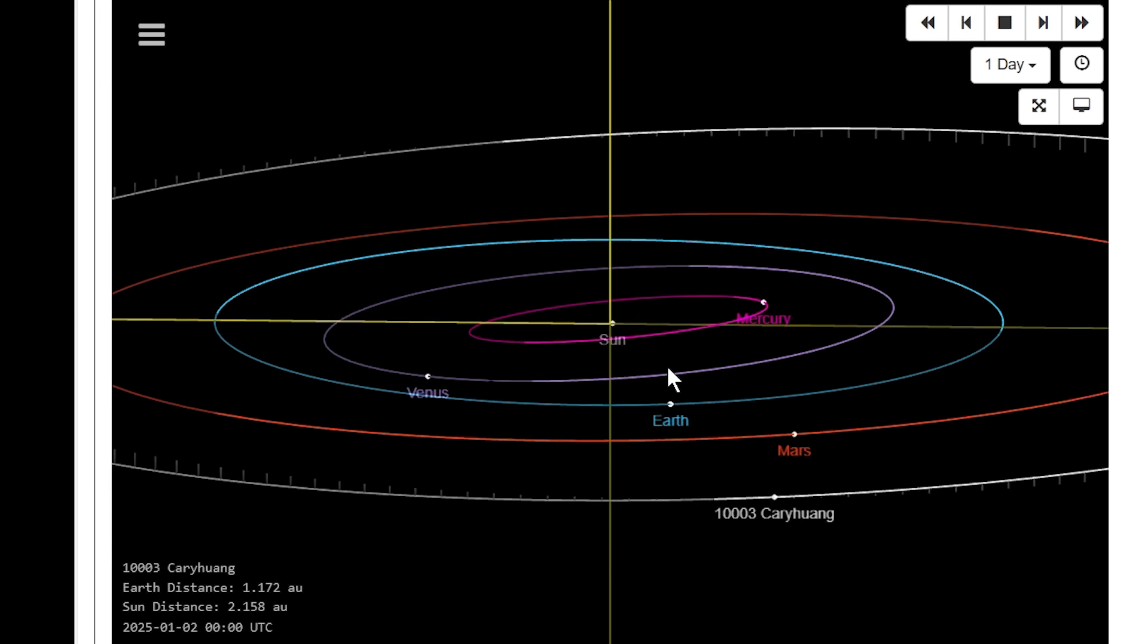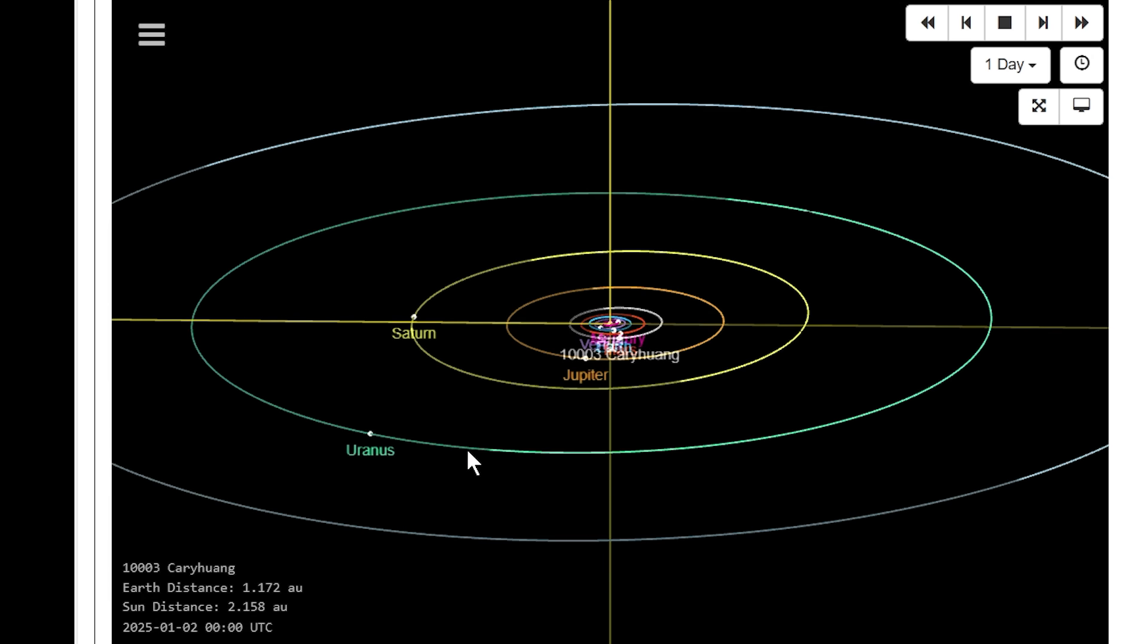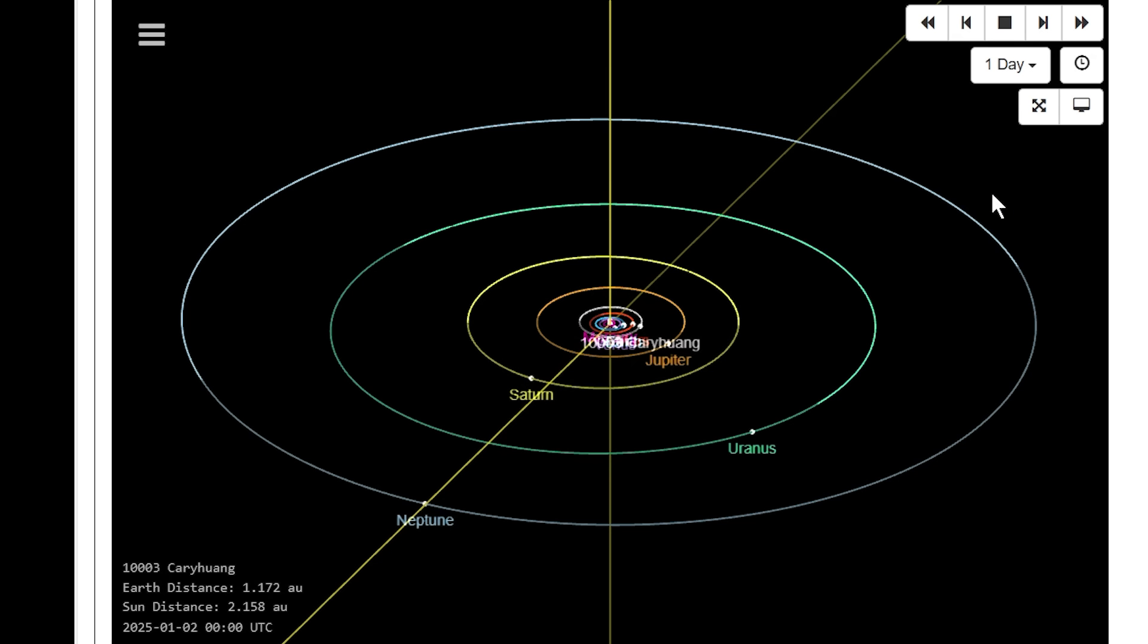And then just to show the whole solar system, we have Jupiter, Saturn, Uranus, and Neptune, which is now the furthest most planet. And the further you go, the slower they orbit.